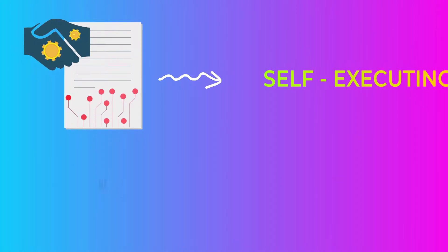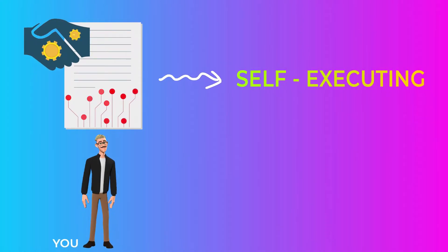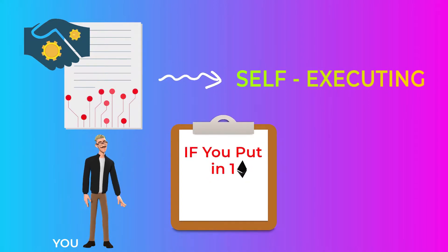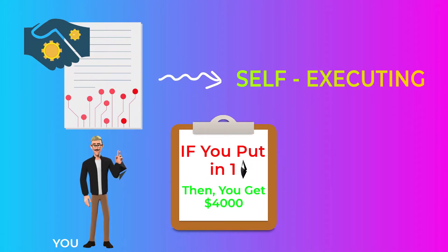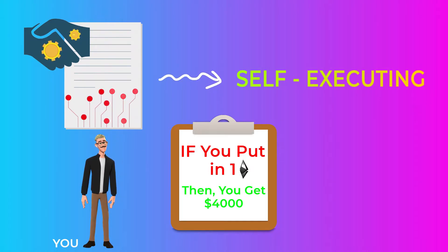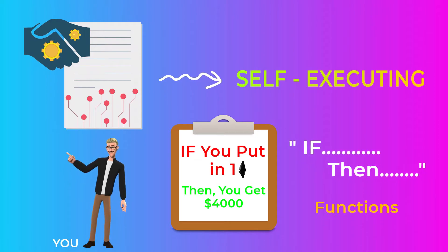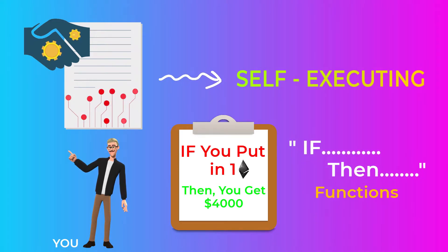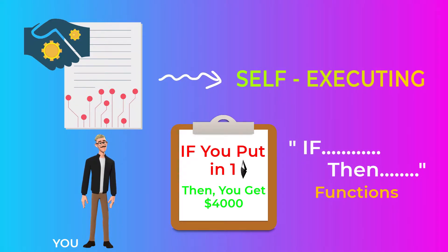These smart contracts are self-executing, which means they execute the terms of the agreement automatically when certain conditions are met, without the need for human intervention. Smart contracts are written in the form of if-then functions. If something happens, something else will automatically happen.